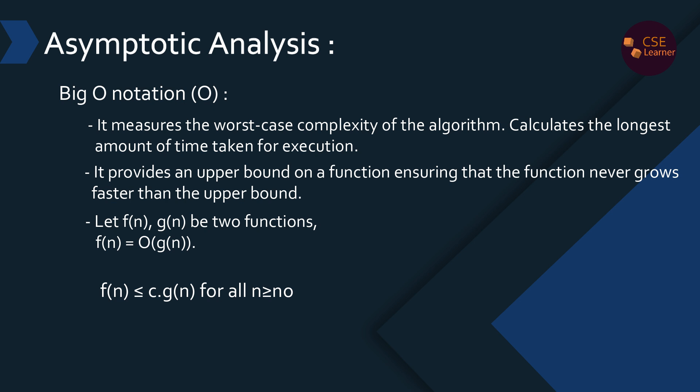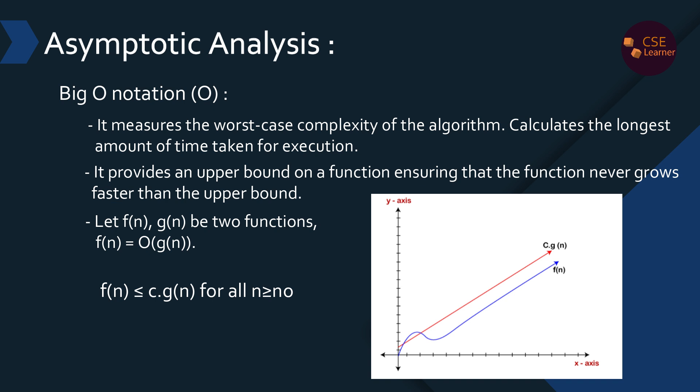Here, c is a constant. We use this constant to scale g(n) as the upper bound. In the graph, the x-axis represents input size and the y-axis represents time — that is time complexity. g(n) is the upper bound and f(n) must stay below it. n0 is the minimum number of inputs from which this bound holds. Big O notation means the upper bound.